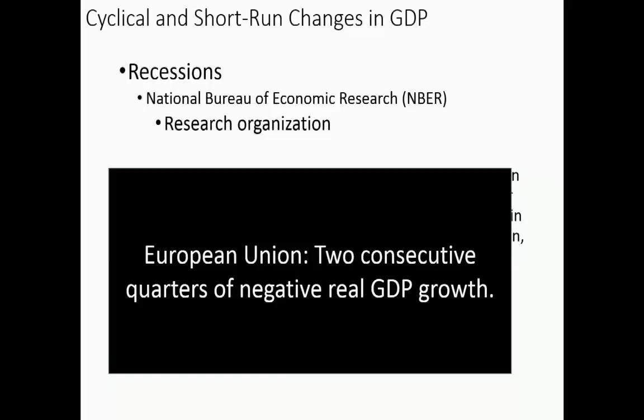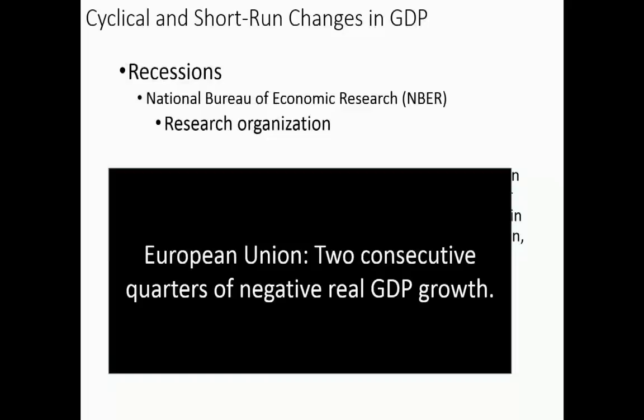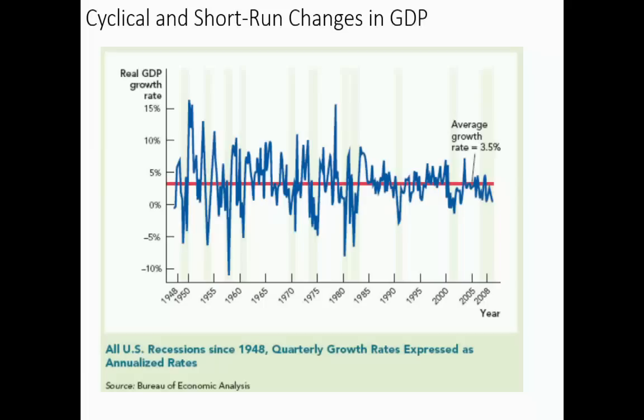Under the EU definition, you could have real GDP decrease by 10% one year, increase by 1% the next, fall by another 10%, and increase by 1% — and at no point would you be in recession by this definition, even though you're much worse off. But at least it is concrete. Looking at actual US recessions, the shaded regions are the official NBER recession dates. Here is the most recent one in 2008.